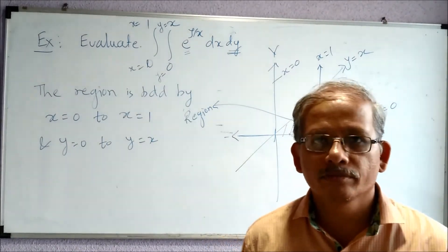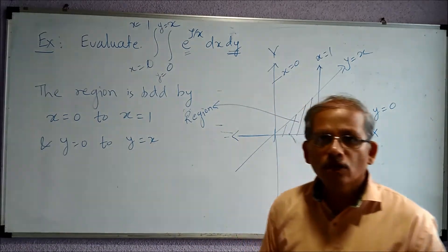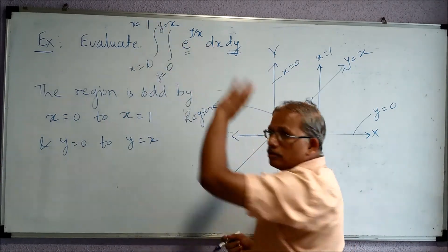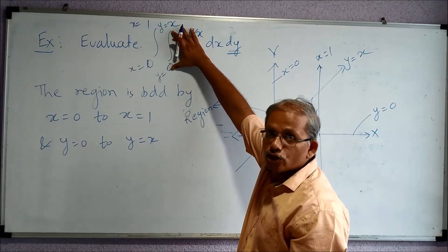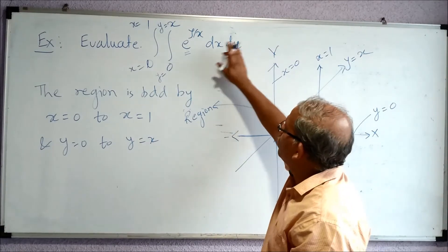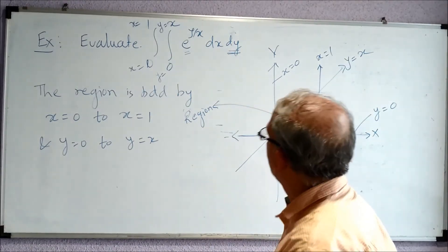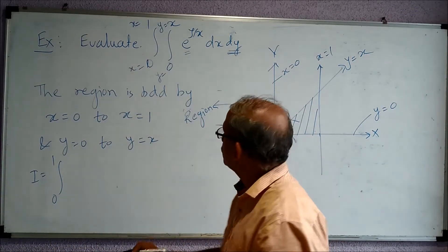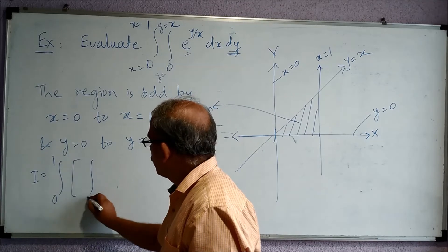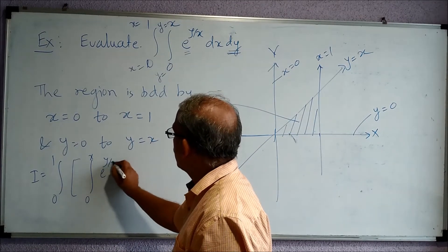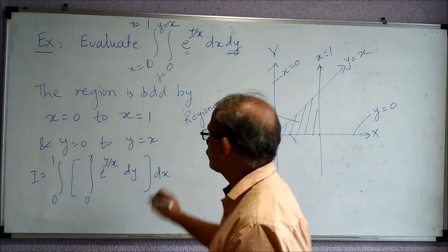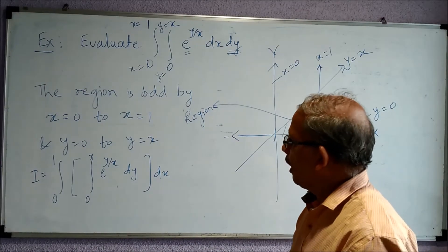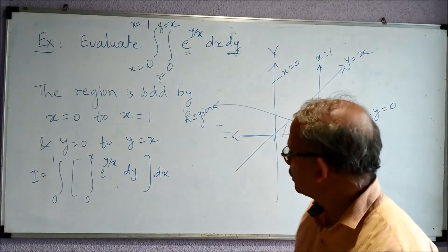This is the region in the x-y plane over which we are integrating this function. The limits are directly given. The inner limit involves x, so we integrate the inner integration with respect to y, and then the outer integration with respect to x. So I write: I equals integral from 0 to 1 of — splitting things — the bracket integral from 0 to x of e to the power y by x, dy, dx. Just for convenience I have split this; there is no real need to write such brackets, but for the first example we will do that.